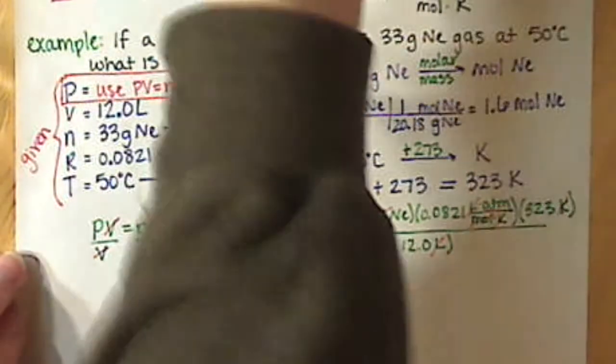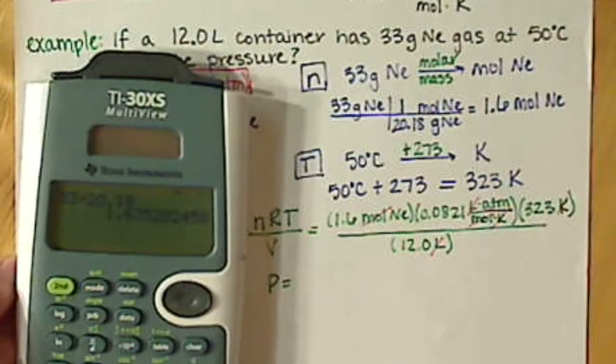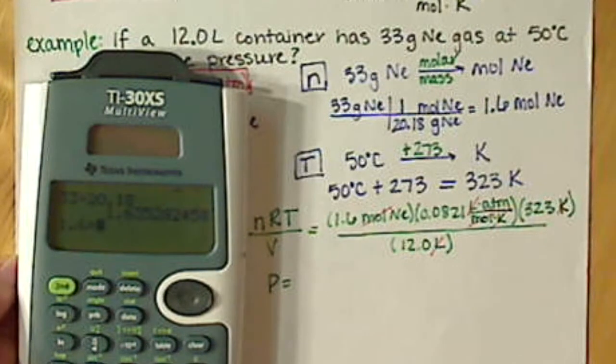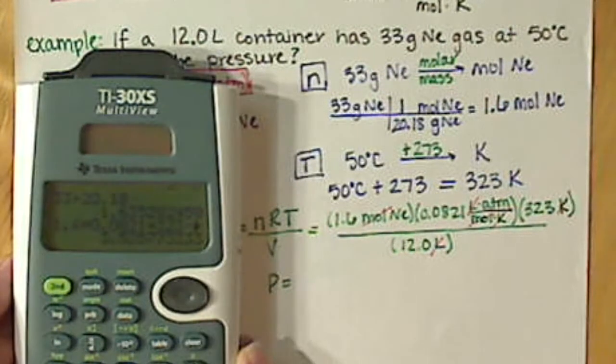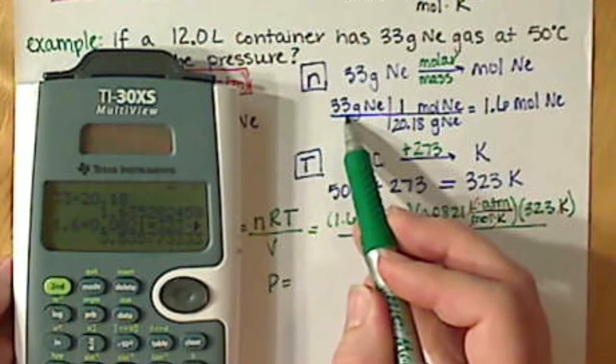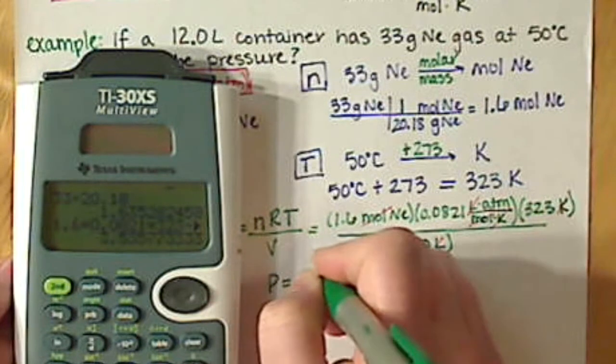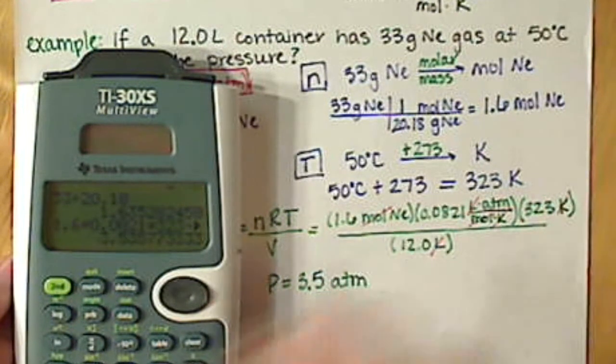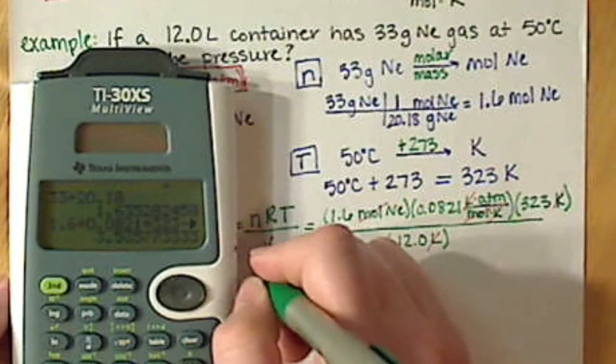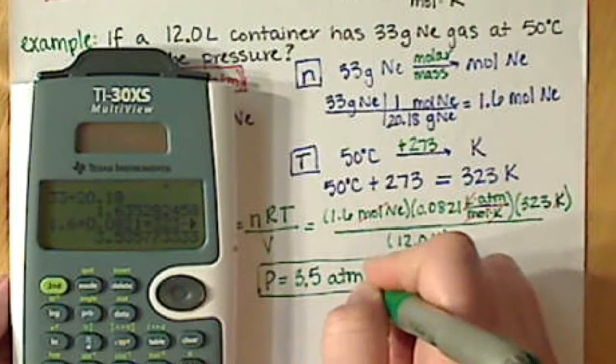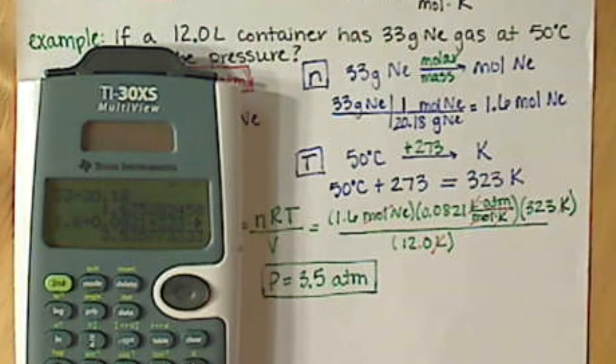Our pressure is going to be equal to 1.6 times 0.0821 times 323, and I'm going to divide that by 12. I need 2 sig figs from our original 2 sig figs in our mass, so I have 3.5 atmospheres.